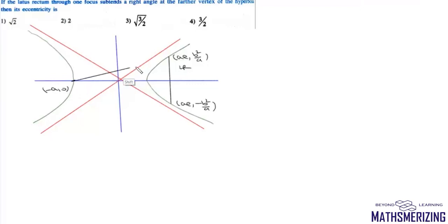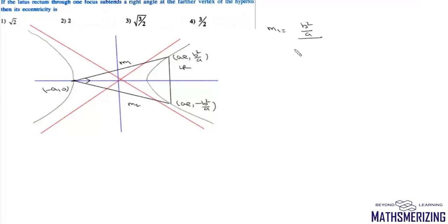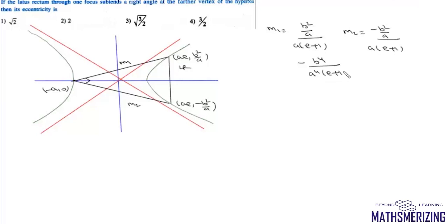The question says this angle is 90 degrees, so we need to find the eccentricity. We find m1 and m2: m1 = (b²/a) / (ae + a) = b²/[a²(e+1)], and m2 = (-b²/a) / [a(e+1)]. The product of slopes equals -1, so we get -b⁴ / [a⁴(e+1)²] = -1, giving b⁴ = a⁴(e+1)².